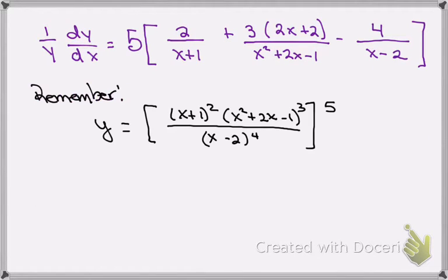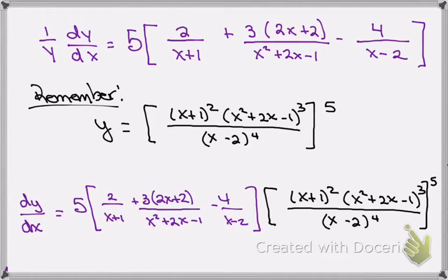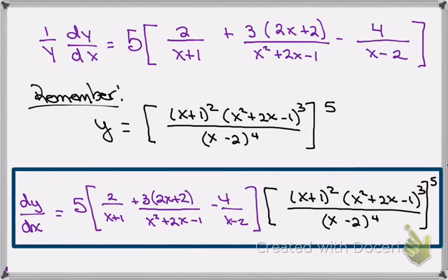So let's look at it fresh. We just need to remember from the very beginning of the problem, we were told that y was equal to the quantity (x+1)² times (x²+2x-1)³ over (x-2) to the 4th power, and all of that to the 5th power. So I'm going to multiply both sides of the equation by y. And when I do that, I'm going to get dy/dx equals 5 times all that stuff that was in the purple times the stuff that's in the black, which is y. And so there's my solution.